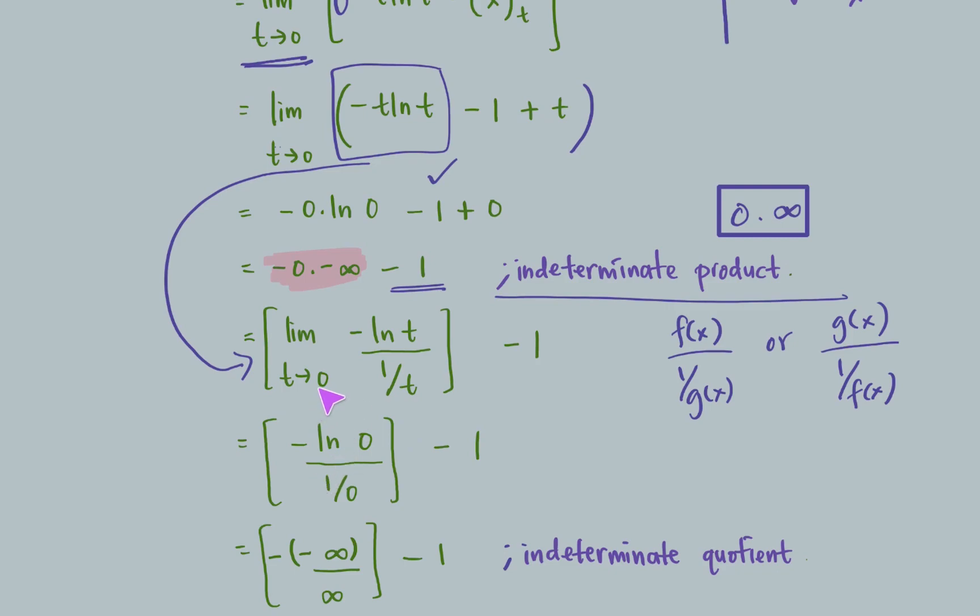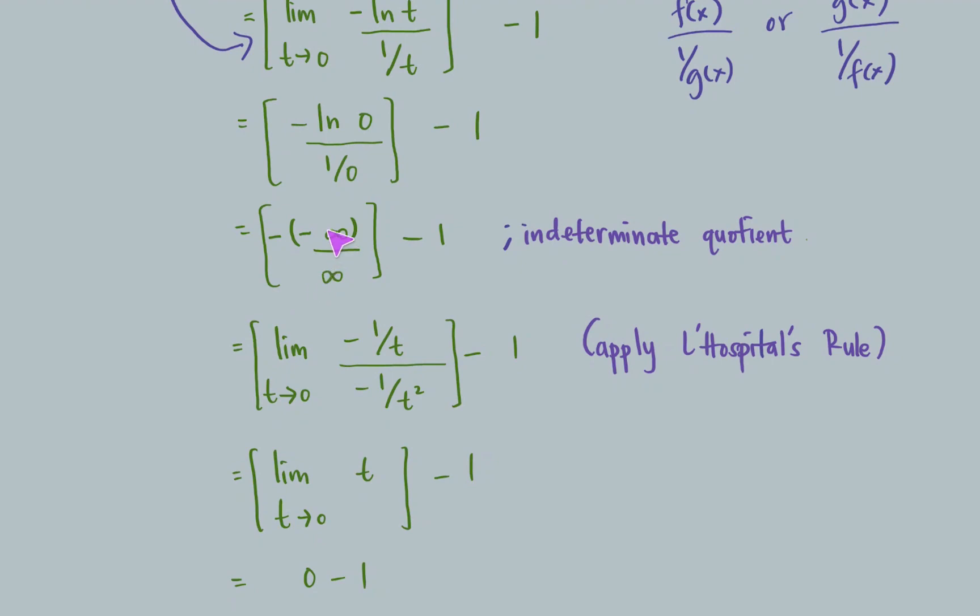After that, substitute the value t approaches 0. We have this one, which is infinity over infinity, which means indeterminate quotient. Therefore, we need to apply the L'Hôpital's rule.